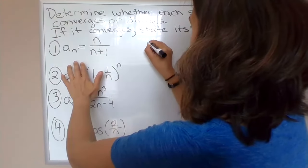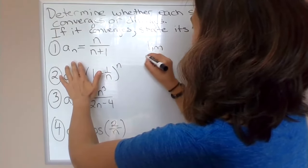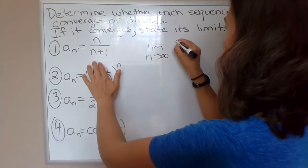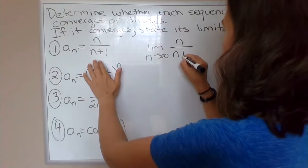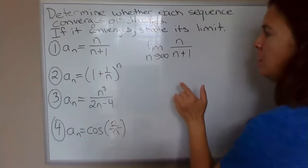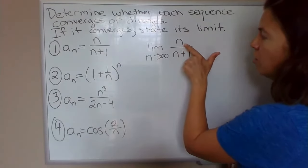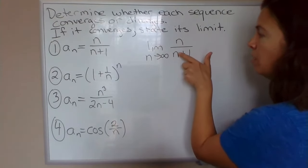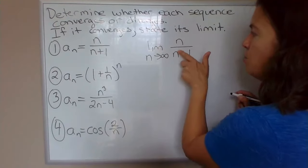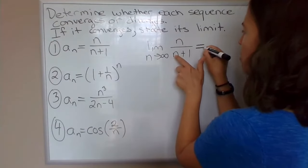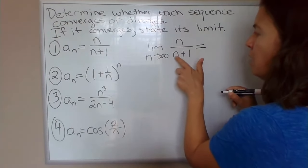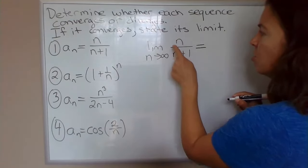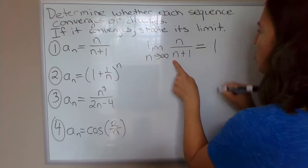So in this first example, we can determine whether this sequence converges or diverges by taking the limit as n approaches infinity of n over n plus 1. Now with this limit, the thing to notice is that I've got a rational expression with the same degree in the numerator and denominator. And so when you have same degree in the numerator and denominator like this, the limit at positive or negative infinity is equal to the ratio of the leading coefficients. So in this case, 1 over 1. So the limit here is 1.